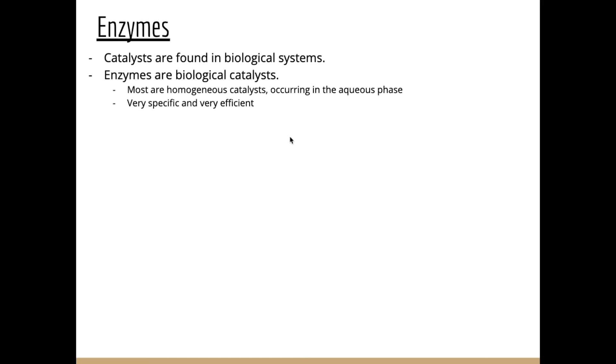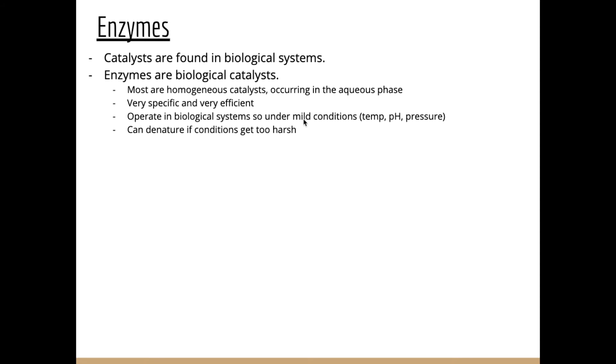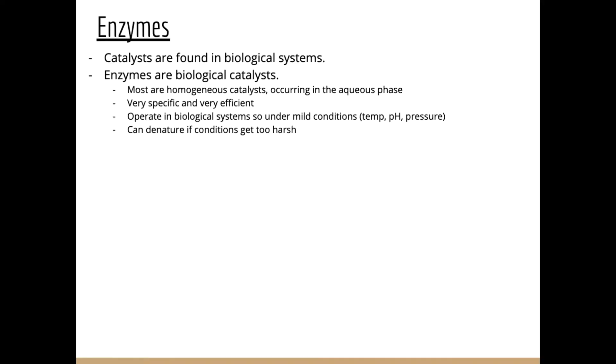Because enzymes are so efficient, they don't often have byproducts. Because they operate in biological systems, they do so under mild conditions — relatively low temperature, relatively neutral pH, and relatively low pressure. They're not effective when taken outside those conditions. They can denature if conditions get too harsh. If you increase the temperature too much, they denature — they fall apart, or their shape changes and they can no longer do their job. So enzymes have optimal temperatures and optimal pHs at which they work.